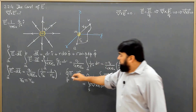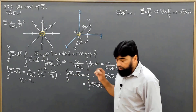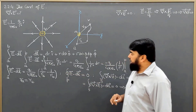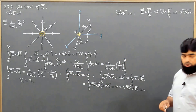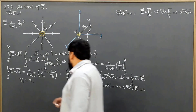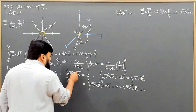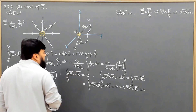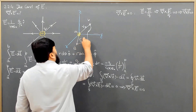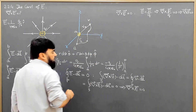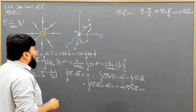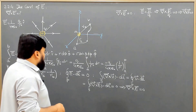In integral form, a field is conservative if its closed loop integral is equal to zero — such a field we call a conservative field. We say that E dot dL is independent of the path; it only depends on the starting and the end point. Such a field we call a conservative field.